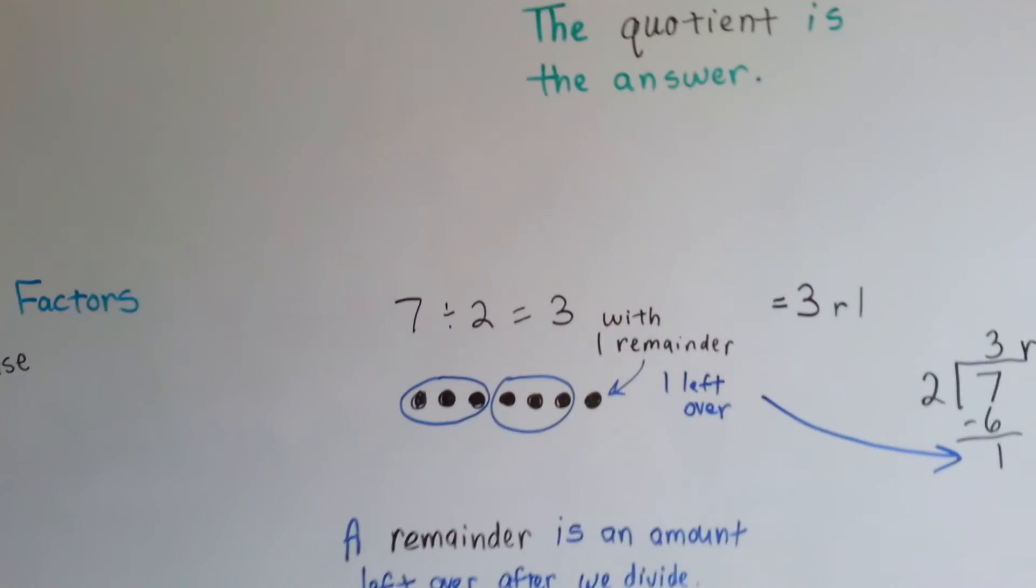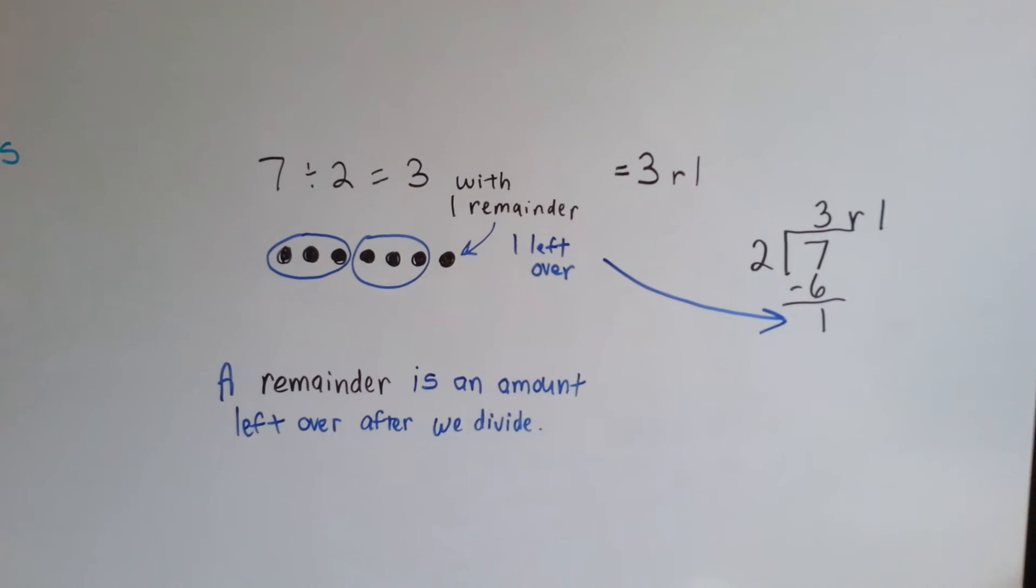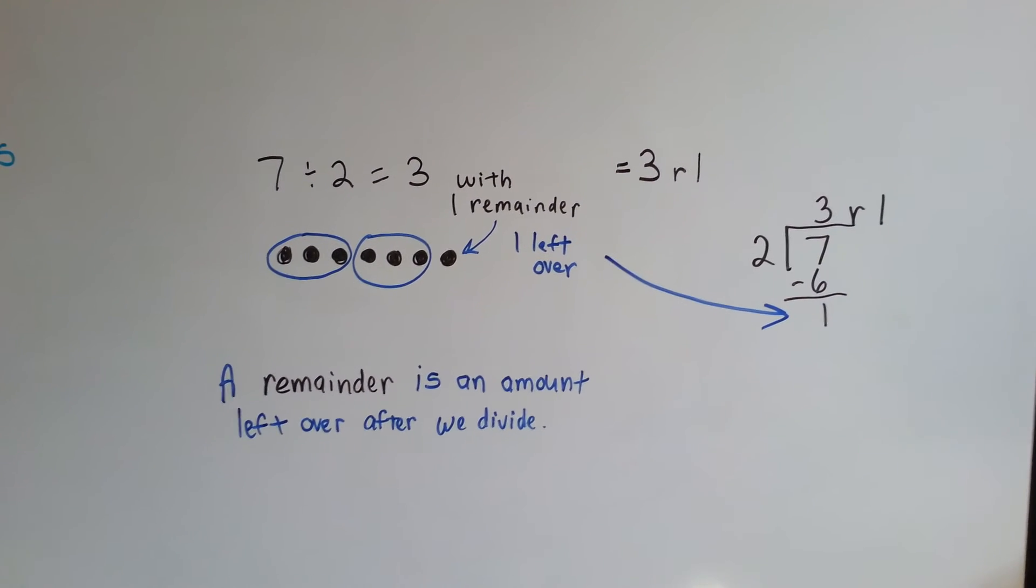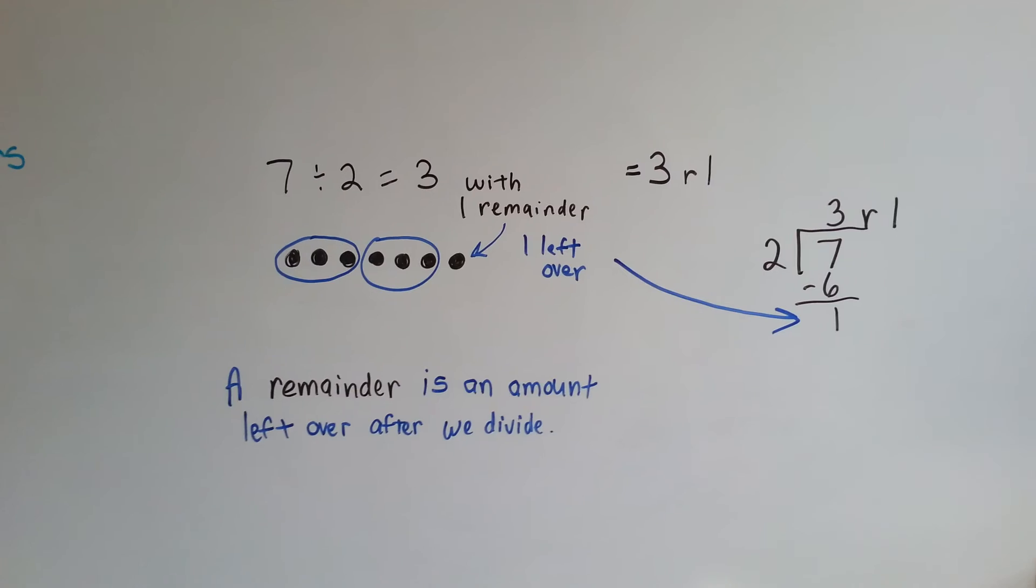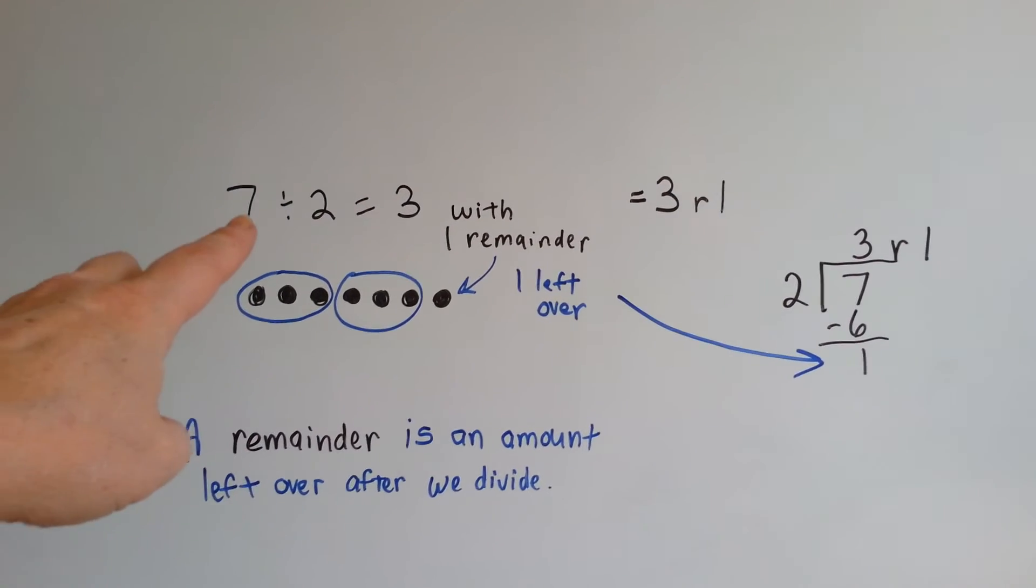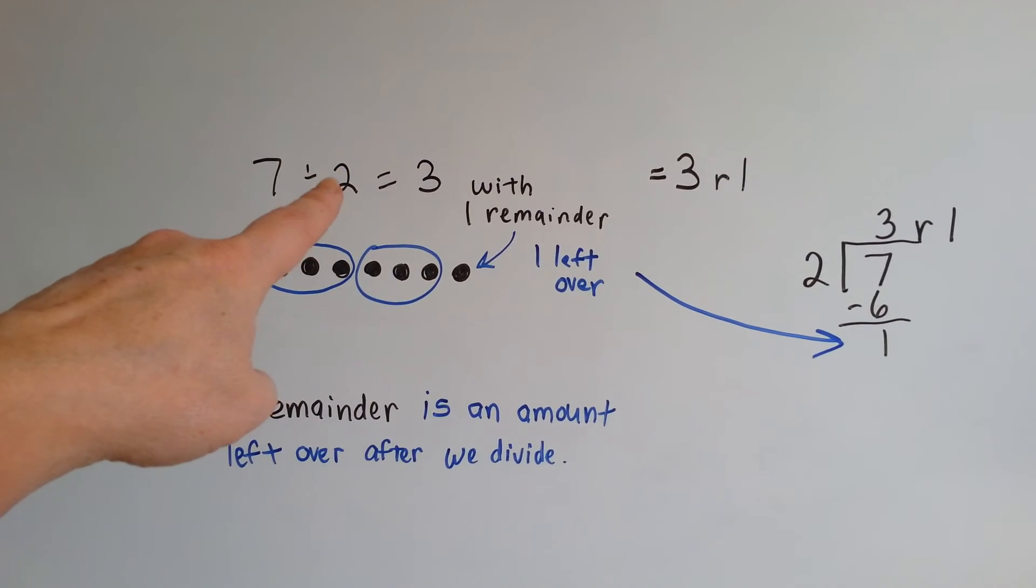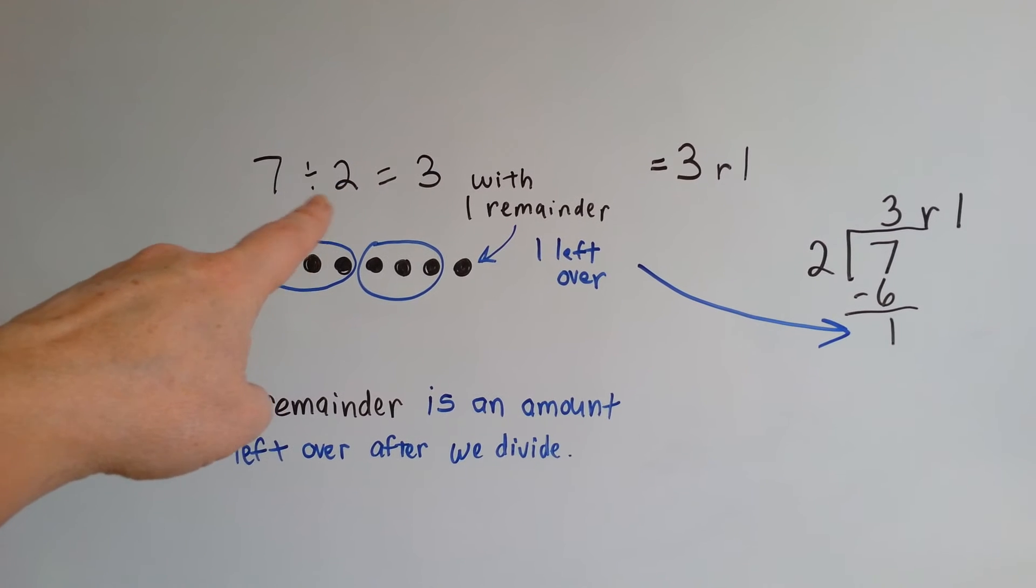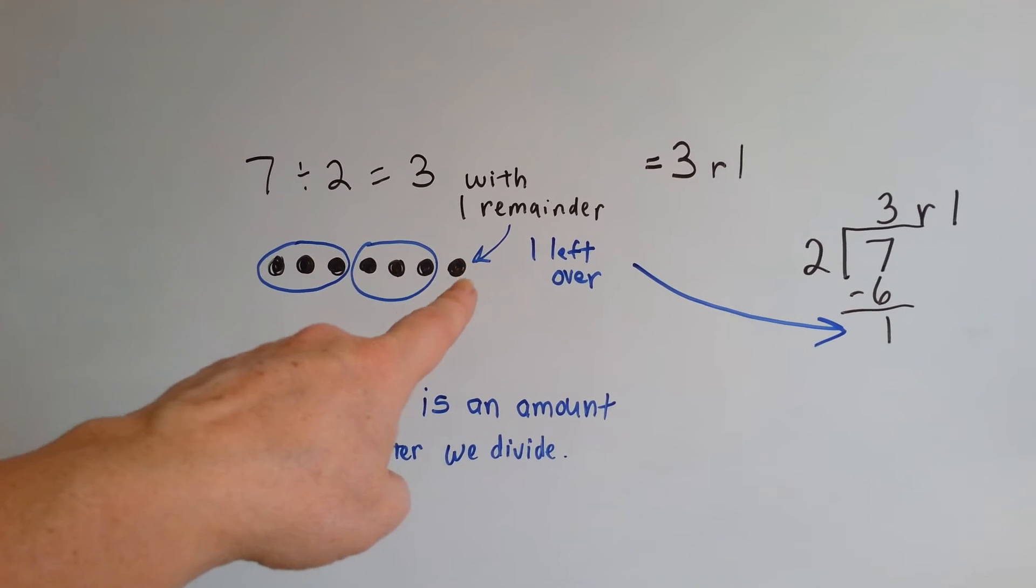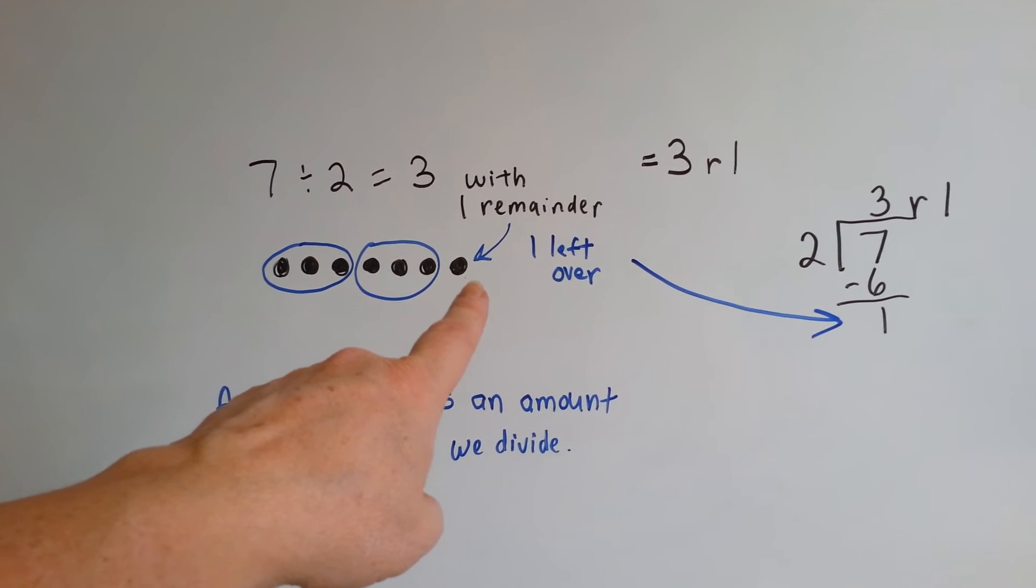The last thing to tell you is, sometimes it's not an even amount. Sometimes there's numbers left over after we divide. If we had seven, and we split it into two equal parts, we would have three in each part, but we'd have a remainder of one left over.